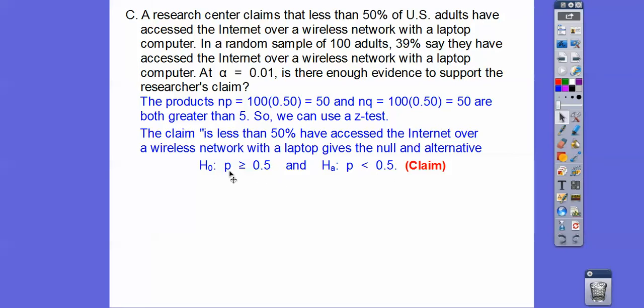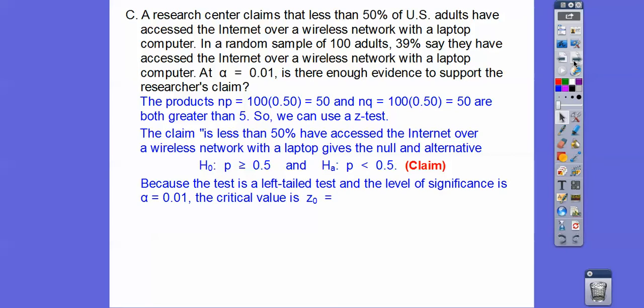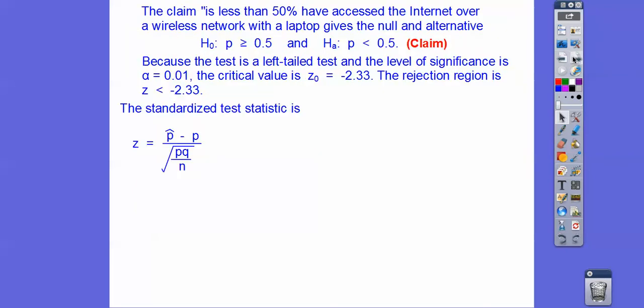The claim is less than 50% have access over wireless network with laptops. Our null hypothesis is the one with the equal part, so P is greater than or equal to 0.5. Our claim is the alternative, less than that. Because it's a left tail test at the 1% level, the critical value is Z = -2.33. Anything to the left of that is in our rejection region.